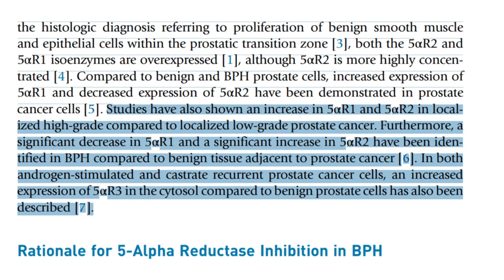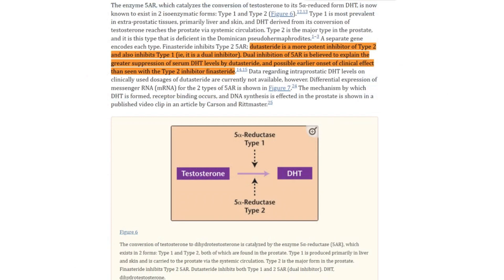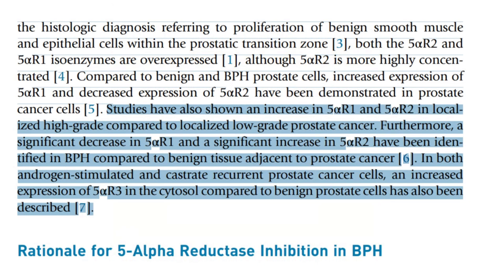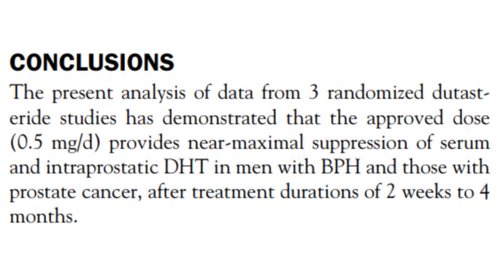This variation in enzyme expression is particularly pronounced in high-grade localized prostate cancer, where both isoforms are elevated compared to low-grade cancer. Dutasteride's pharmacokinetics and pharmacodynamics allow it to effectively target these overexpressed enzymes. It has a high affinity for both 5-alpha reductase types 1 and 2, enabling efficient reduction of DHT levels. The overexpression in BPH and prostate cancer tissues creates an environment where dutasteride can be rapidly absorbed and exert its effects more efficiently compared to normal prostate tissue or the scalp.